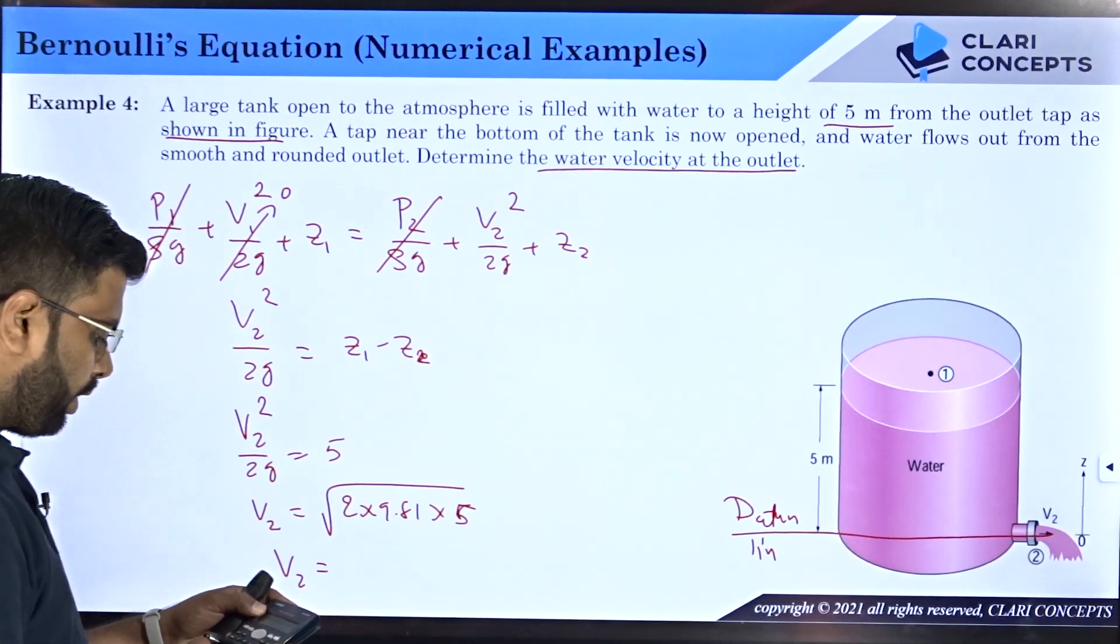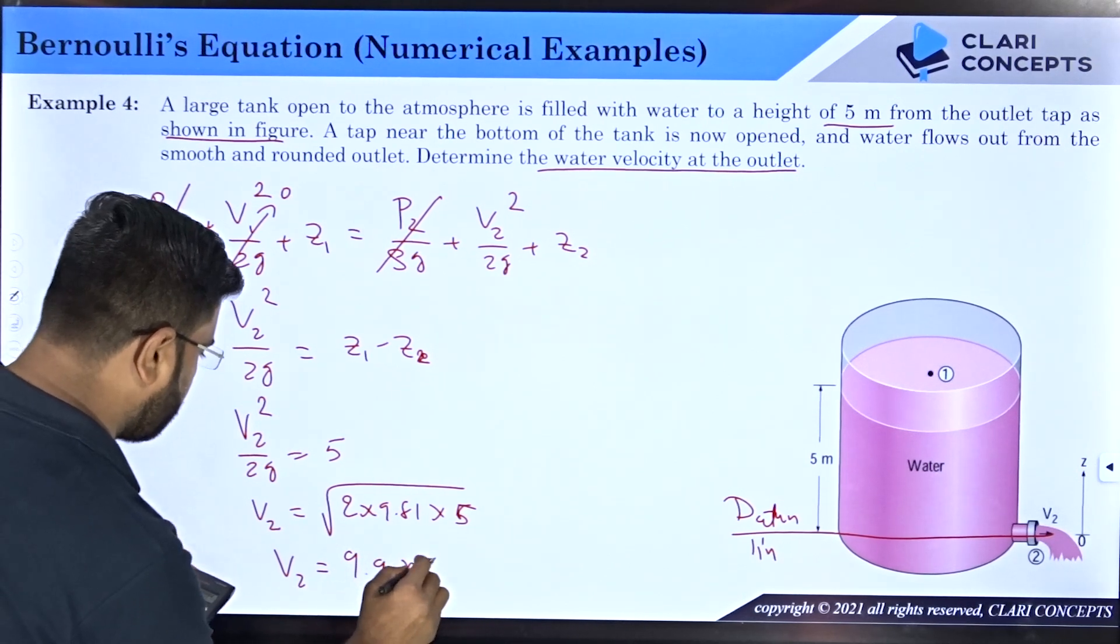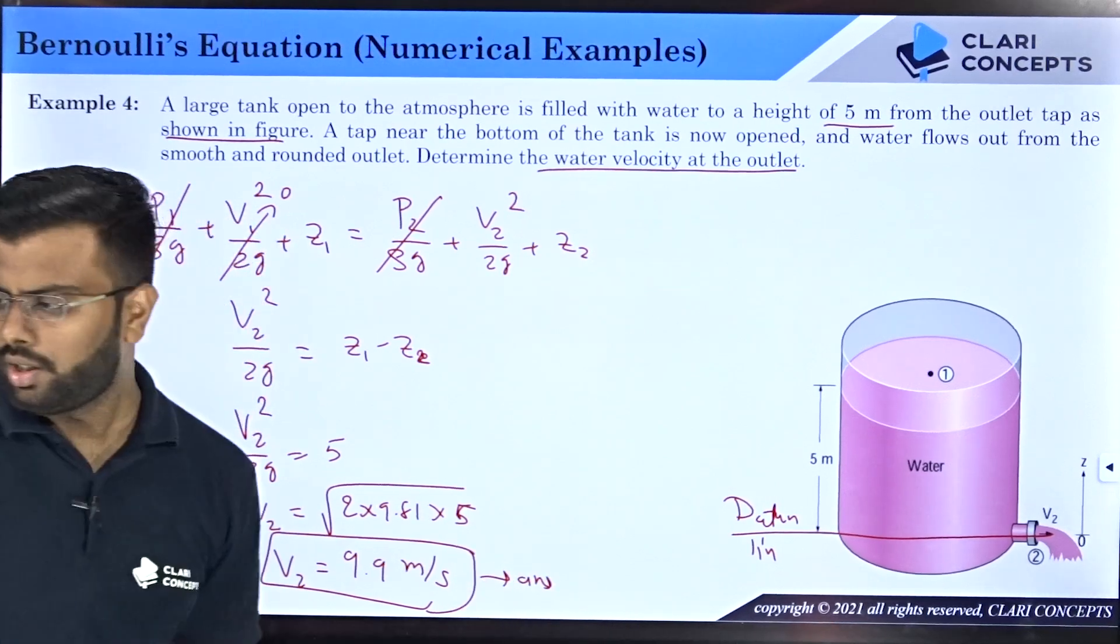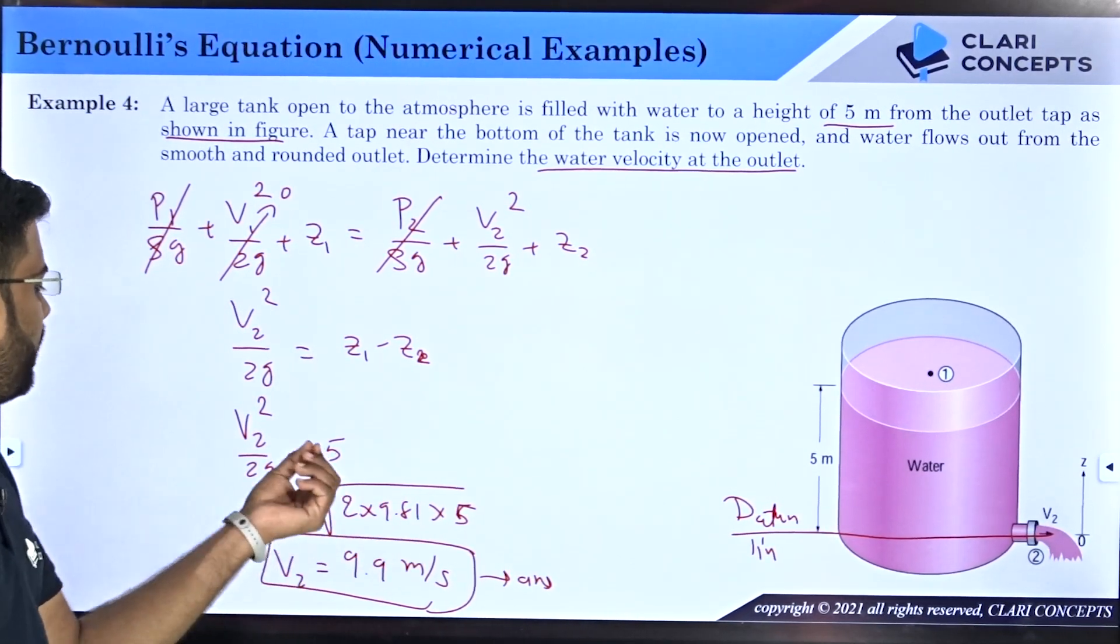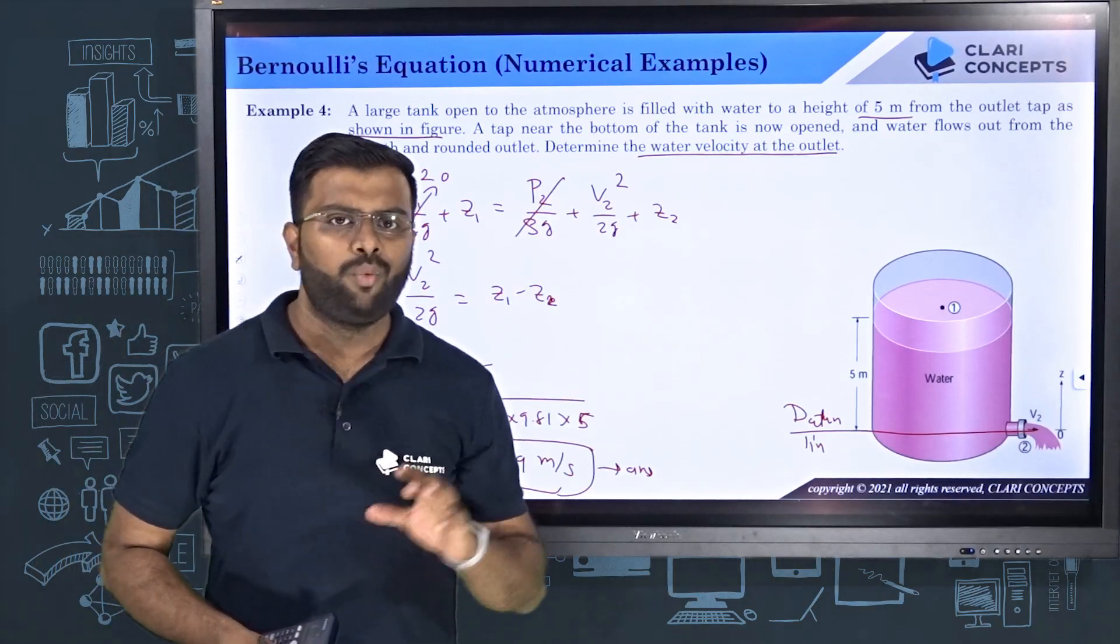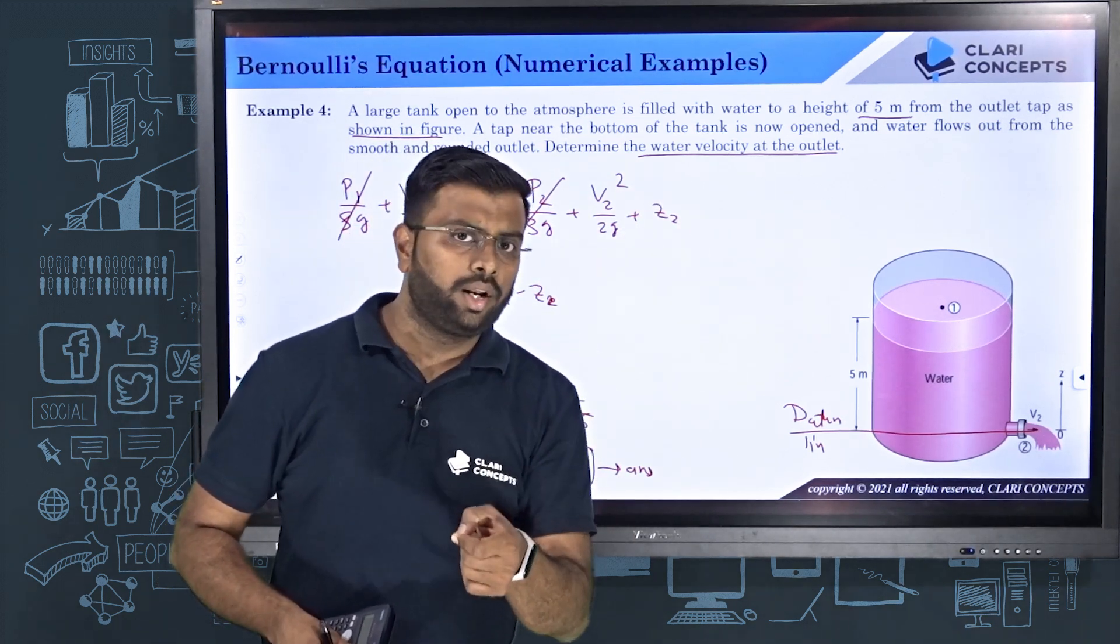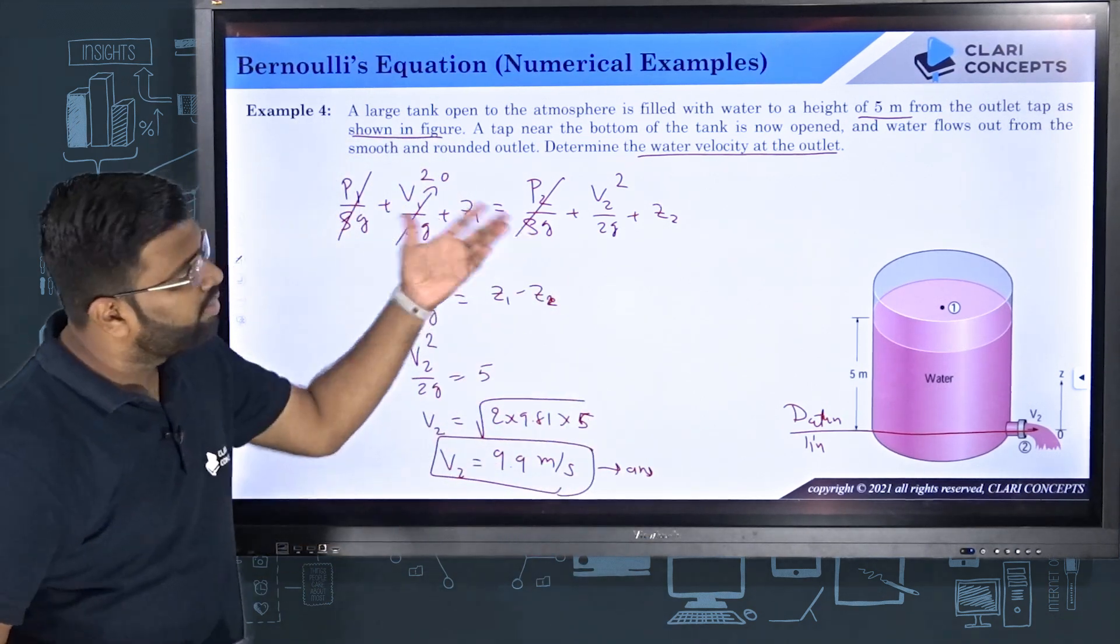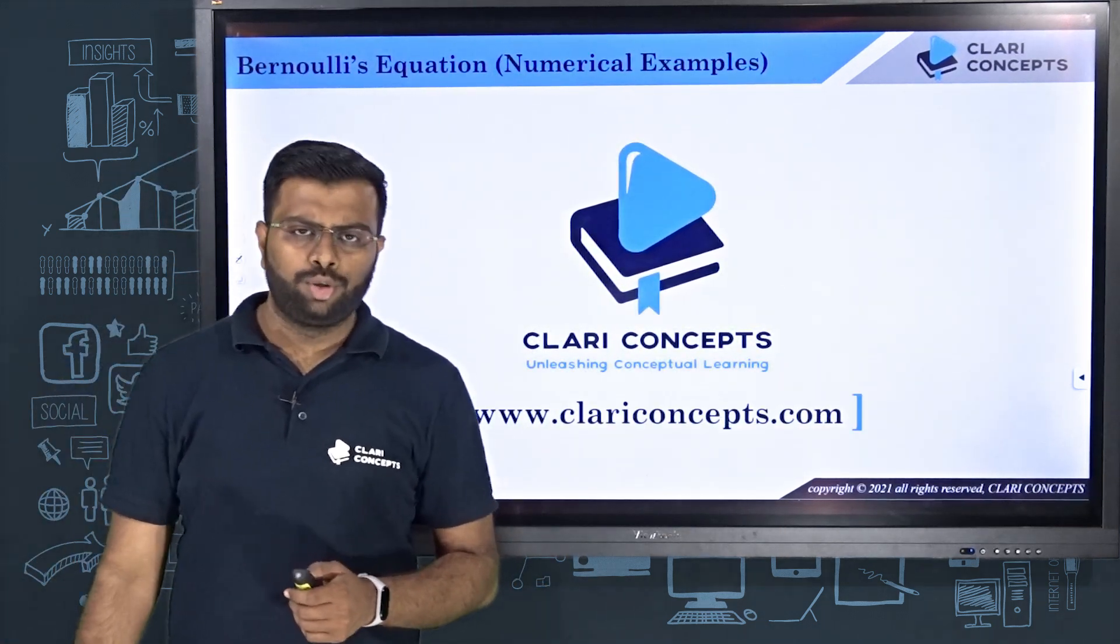What is v2? 2×9.81×5 = 9.9 meters per second. This is the final answer. This is correct. See, this is nothing but √(2gh) - 2g and h is the height. Many times we have used this formula √(2gh) for velocity when there is a free potential head stored in the water surface. If you want to estimate what is the velocity of water coming out from a particular height, you always use the formula √(2gh), and this formula comes from Bernoulli's equation. I hope you understood this very well. Hope to see you in the next class. Thank you so much.